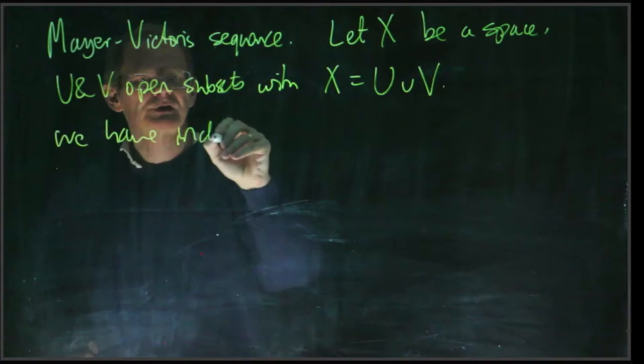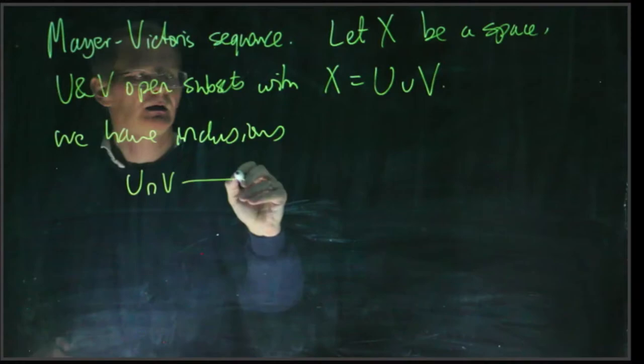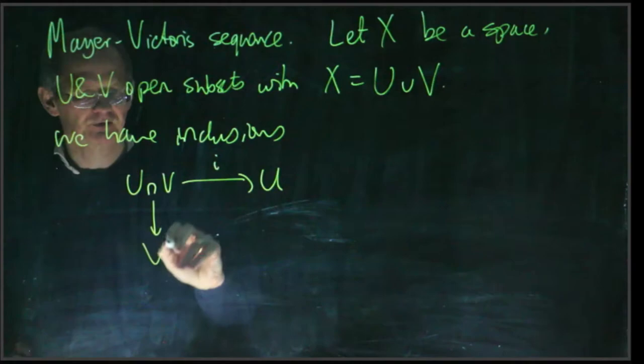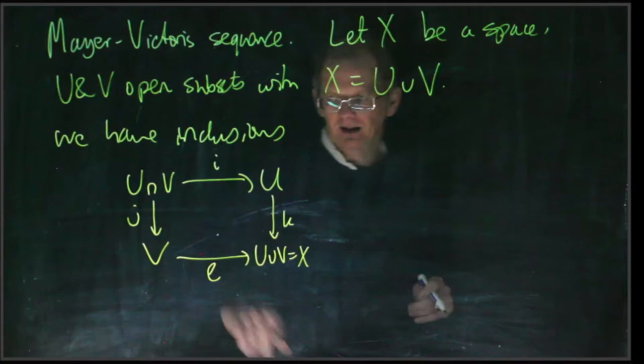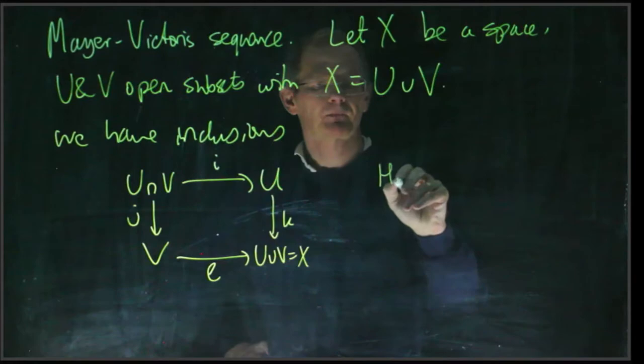We have inclusions: U intersect V going by i as the inclusion in U, and j as the inclusion in V, k will be the inclusion in U union V which is X, and l will be the inclusion of V there.